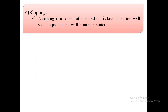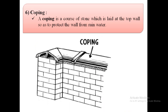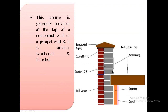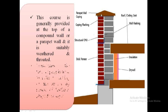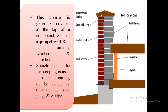The next term is coping. A coping is a course of stone which is laid at the top of a wall so as to protect the wall from rainwater. This course is generally provided at the top of a compound wall or a parapet wall, and it is suitably weathered and throated. Sometimes the term coping is used to refer to the cutting of stones by means of feathers, plugs, and wedges.